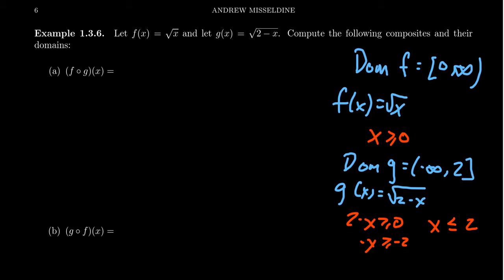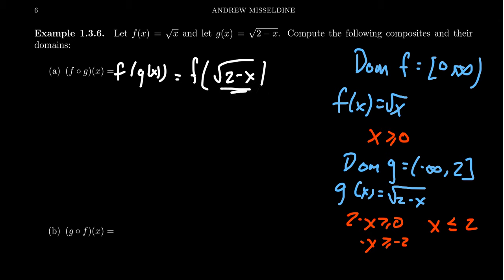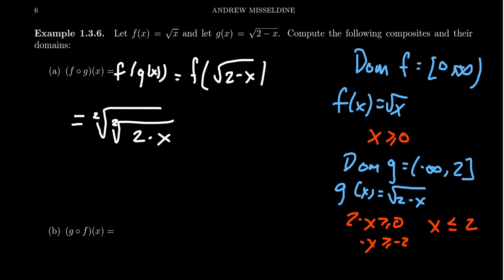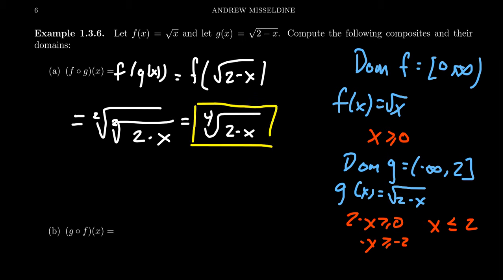Now let's look at f composed with g. This means we put g inside of f. g is given by the square root of 2 minus x, so we substitute the square root of 2 minus x everywhere we see an x in the formula for f. This gives us the square root of the square root of 2 minus x. When composing radicals, we multiply their degrees together, and so a square root of a square root — two times two — gives us the fourth root of 2 minus x. That's the formula for our composite function.